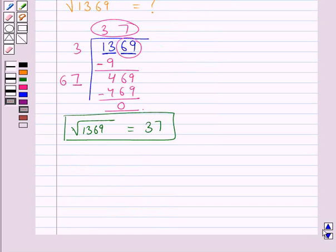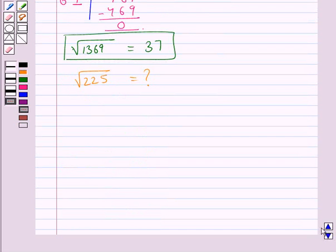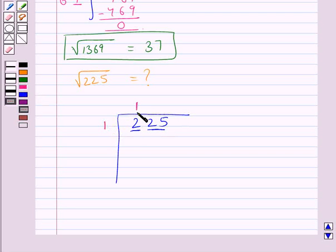In the same way, we will find the square root of 225 by the long division method. We make pairs. 1 times 1 is 1. We subtract this 1 from 2 to get 1. We take down this pair of digits, 2 and 5, with 1.